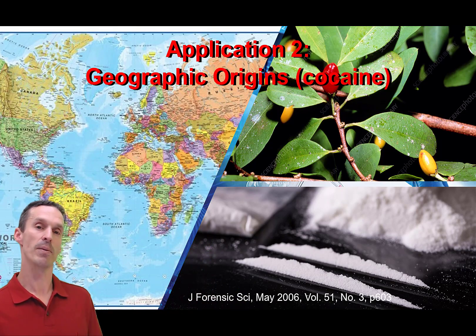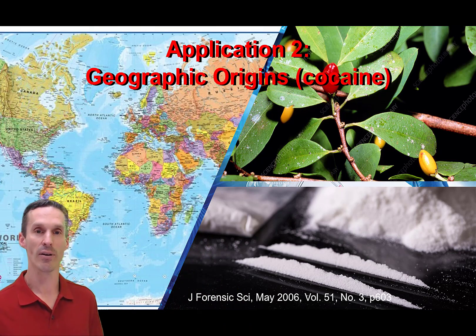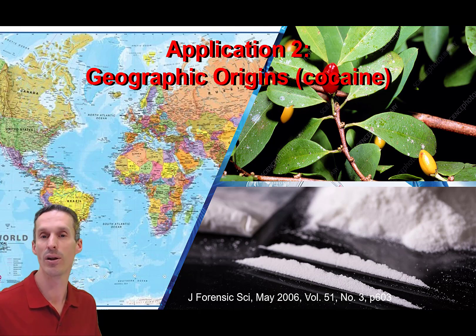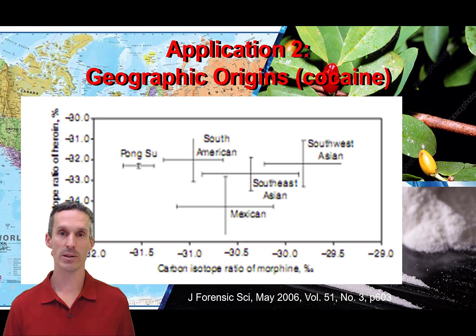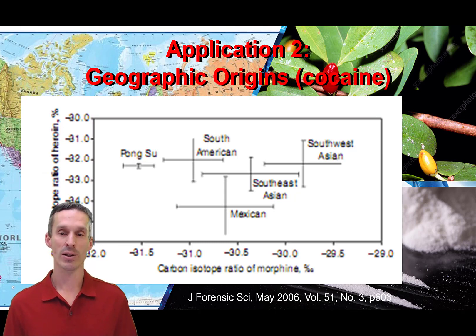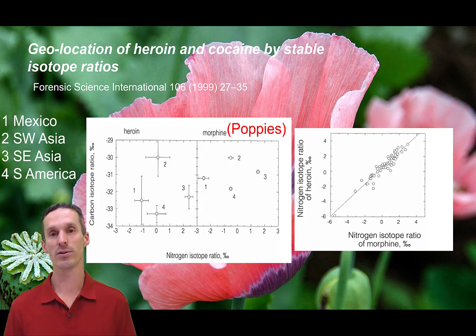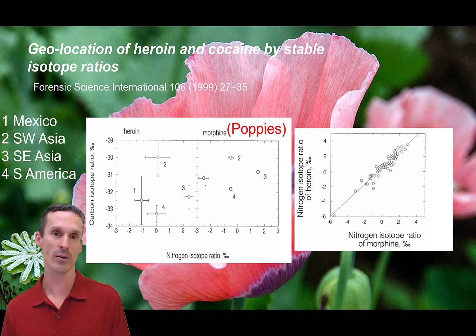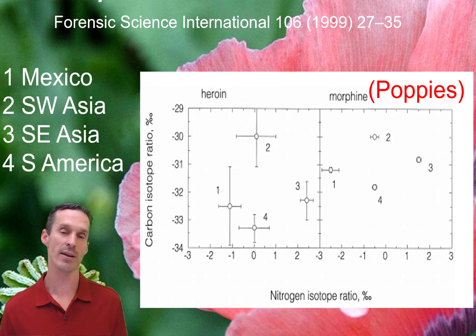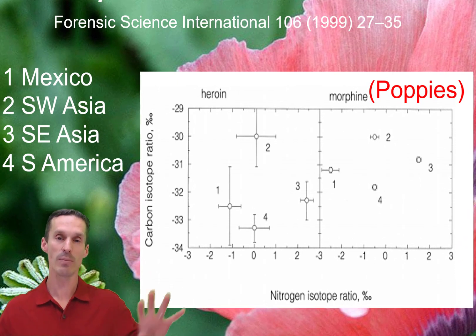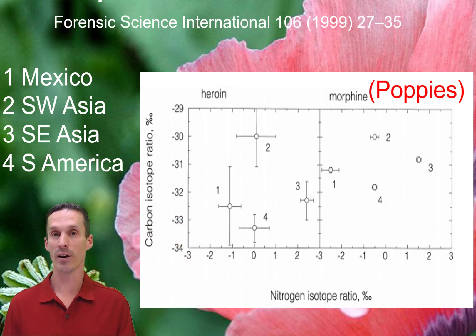Another interesting application is using isotope ratio mass spectrometry to geographically locate drugs. All these drugs grow in different soils and regions, and that soil can have a different isotope signature than another part of the world. The carbon isotope ratio for morphine and heroin differs depending on where they're grown. If you have a drug seizure, you can do this analysis, figure out the ratio, and localize where the drug came from. The carbon ratio can also be extended to other isotopes — plotting nitrogen isotope ratio as a second dimension further separates samples along with the carbon isotope ratio, so you can localize exactly where drugs came from by measuring both carbon and nitrogen ratios.